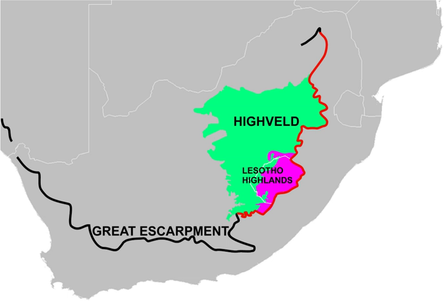The Highveld covers an area of almost 400,000 square kilometers, or roughly 30% of South Africa's land area. The Highveld terrain is generally devoid of mountains, consisting of rolling plains, especially in the Free State, sometimes interrupted by rocky ridges such as the Witwatersrand, the Magaliesberg, and Vredefort Dome. The Vaal River and its tributaries form the main water drainage system of the Highveld. Tributaries of the Orange River drain the most southerly regions of the Highveld.